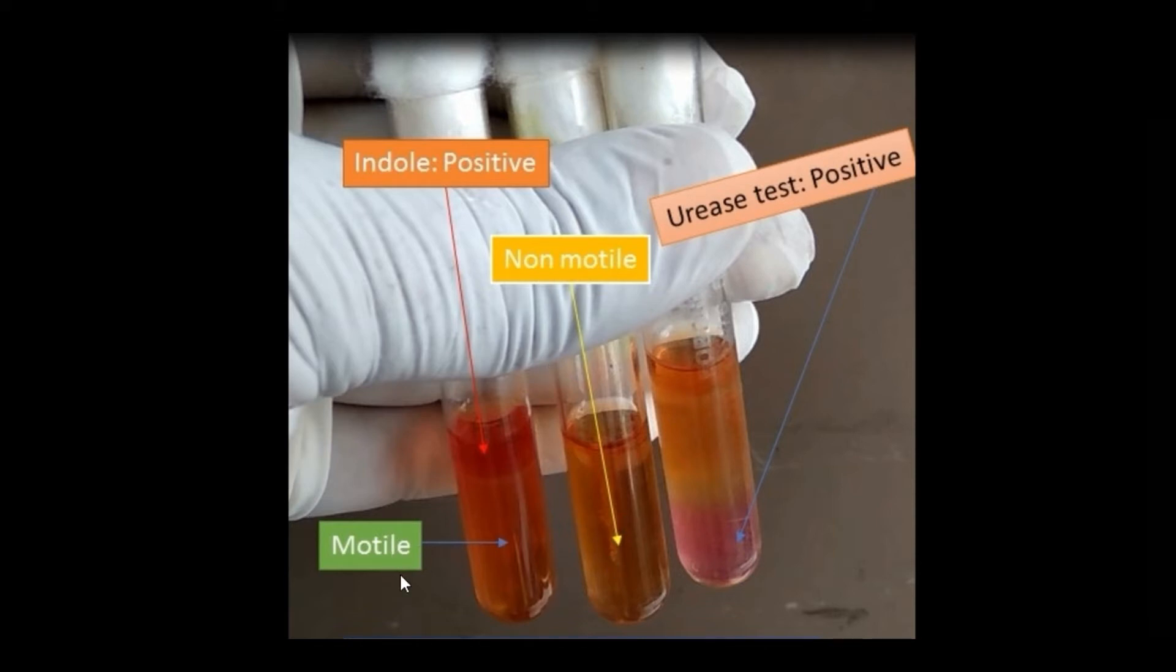Let's start from motility. Growth of organism throughout the medium indicates the organism is motile, whereas growth restricted around the stab line indicates the organism is non-motile. Here you can see growth restricted around the stab line, whereas in this medium growth is diffused. Therefore, the organism is motile in this tube, whereas non-motile in this tube.